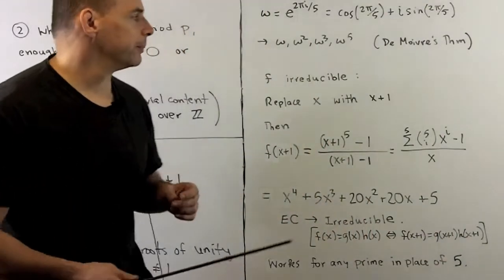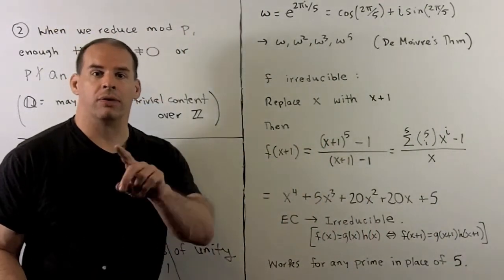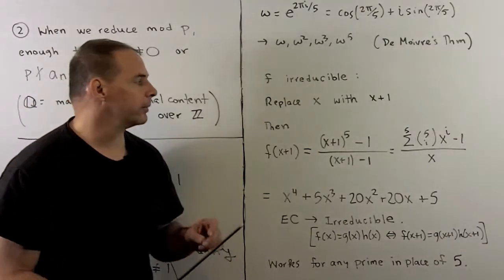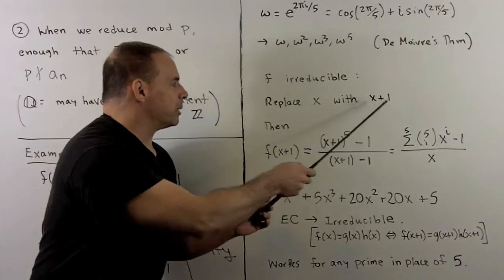Now, to see this, we can't work with the polynomial as is. All the coefficients are 1, so there are no primes present. What I'll do, we're going to replace x with x + 1.